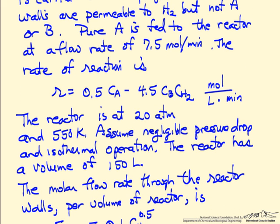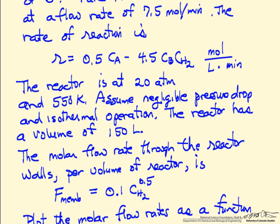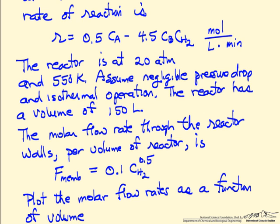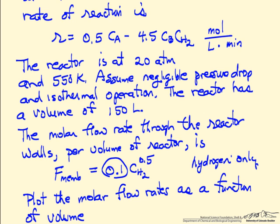We assume no pressure drop through the plug flow reactor and that it's isothermal — we can relax that assumption by adding an energy balance equation, but this is just to demonstrate the behavior. Total reactor volume is 150 liters. The flow rate of hydrogen through the reactor walls is modeled similarly to a palladium membrane, where the flux is proportional to the concentration of hydrogen to the 0.5 power. This flux, in units of moles per volume per time, incorporates the surface area per volume of the reactor, so that term would differ for a different reactor shape.